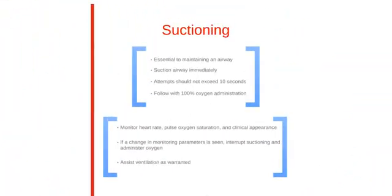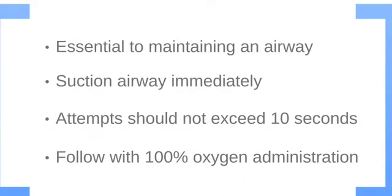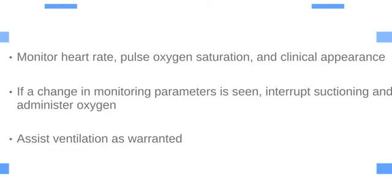Suctioning is essential to maintaining an airway. Suction the airway immediately if there are secretions, blood, or vomit. Do not suction for more than 10 seconds. To avoid hypoxemia, follow suctioning attempts with a short period of 100% oxygen administration. Monitor the patient's heart rate, pulse oxygen saturation, and clinical appearance during suctioning. If a change in monitoring parameters is seen, interrupt suctioning and administer oxygen until the heart rate returns to normal and clinical condition improves, and assist in ventilation as warranted.